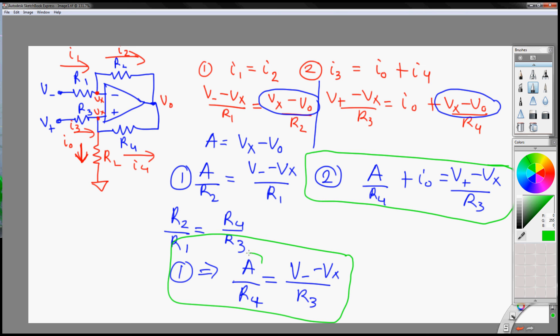You notice that A over R4, you can substitute that in here and solve for I0. Let's do that.